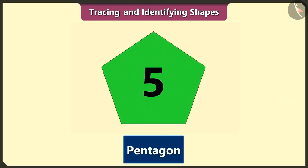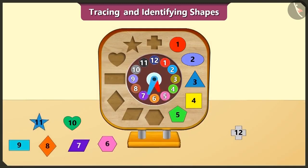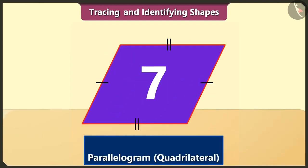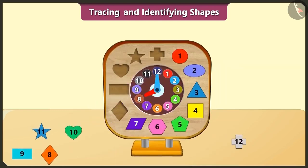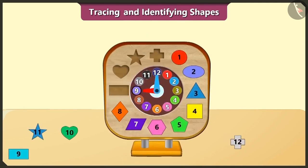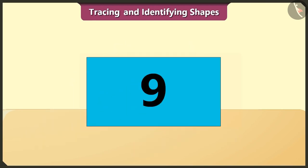The five-sided pentagon is fifth in order. The six-sided hexagon is sixth in order. The four-sided quadrilateral is seventh in order. The four-sided rhombus is eighth in order. And the rectangle is ninth in order here. Its opposite sides have the same length.